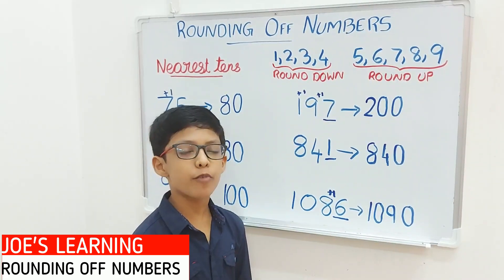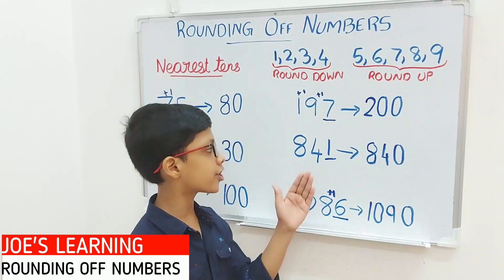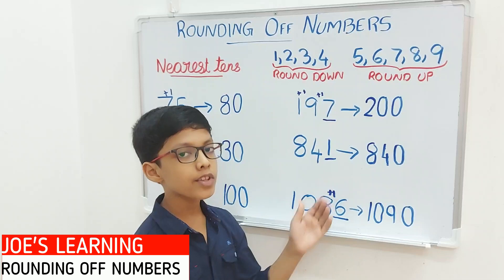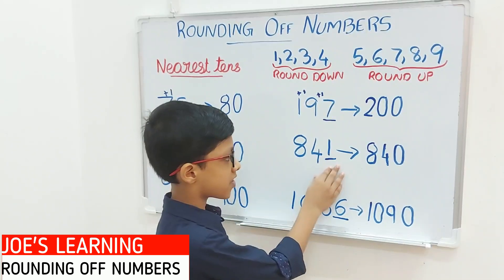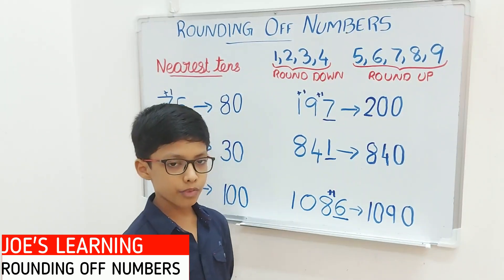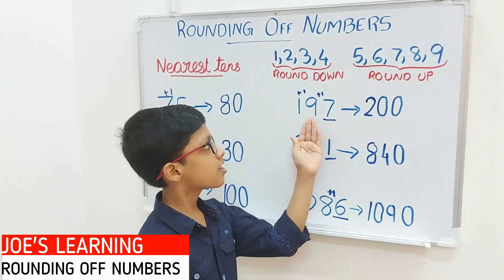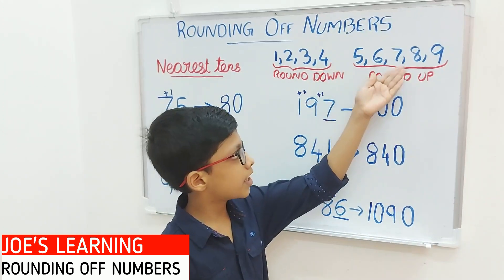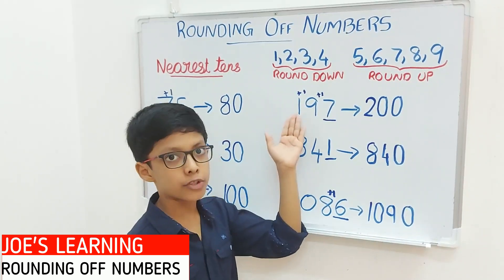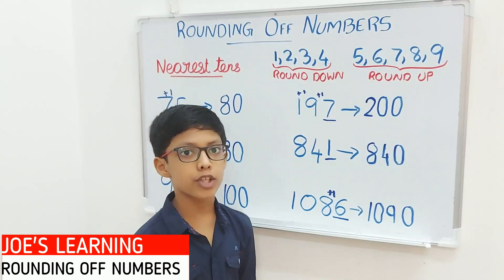Now we have understood that if we want to round off a number to the nearest tens, we need to first look at the digit in the 1's place. If that digit is lesser than 5, we put a 0 in the 1's place, leaving the digits in all other places before it the same. But if the digit in the 1's place is greater than or equal to 5 — that is 5, 6, 7, 8, or 9 — then we put a 0 in the 1's place and add 1 to the digit in the tens place. In this way we can round off a number to the nearest tens.